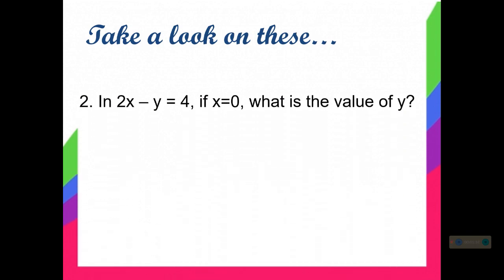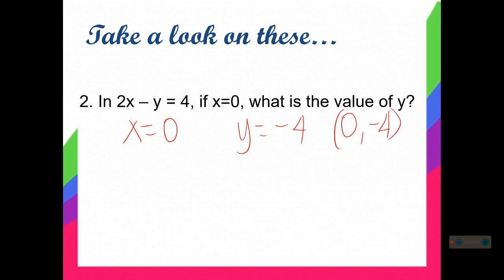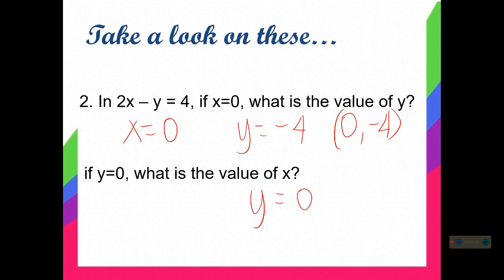Number 2: in the equation 2x minus y equals 4, if x is equal to 0, what is the value of y? We have negative 4. So our ordered pair will be 0, negative 4. How about if y is equal to 0, what is the value of x? We have 2. So the ordered pair here will be 2, 0.